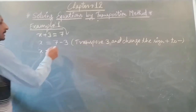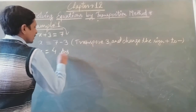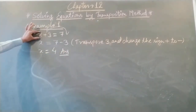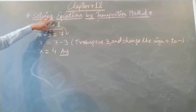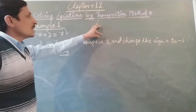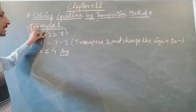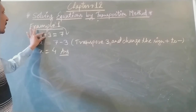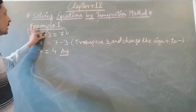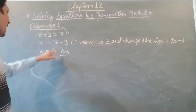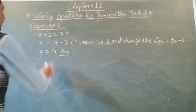That is, we transpose 3 and change the sign from plus to minus — addition to subtraction. So now, if we subtract 3 from 7, we get 4 as our answer. Here the variable is isolated. The numerical term 3 is transposed to the other side of the equation, and the addition sign carried by 3 is changed into a subtraction sign. In this way, we can solve the equation using the transposition method.